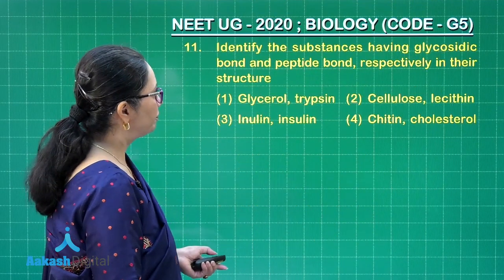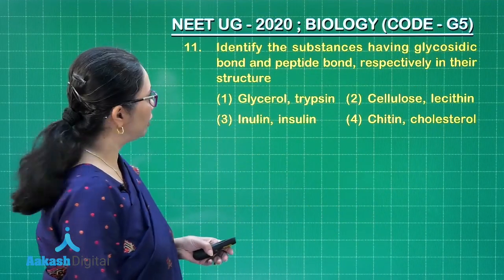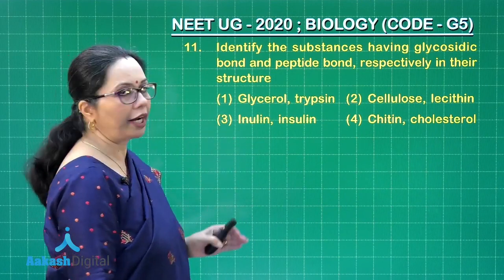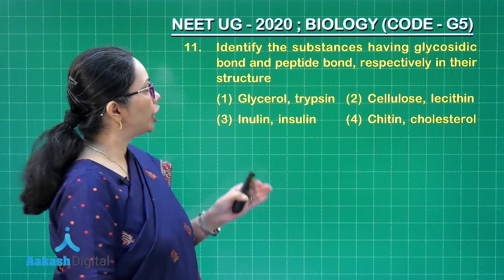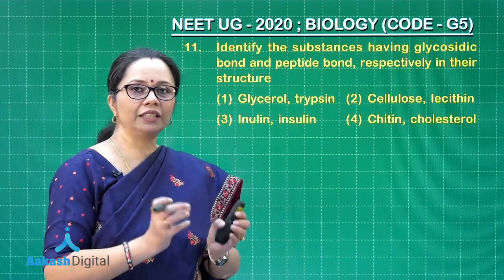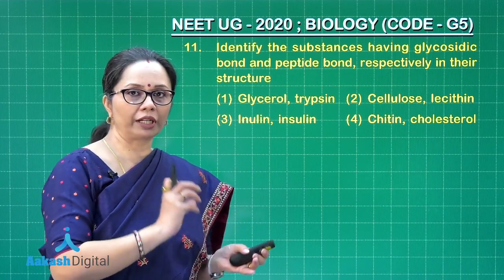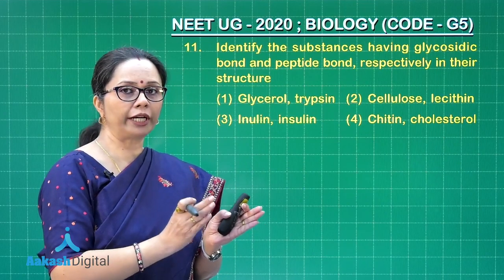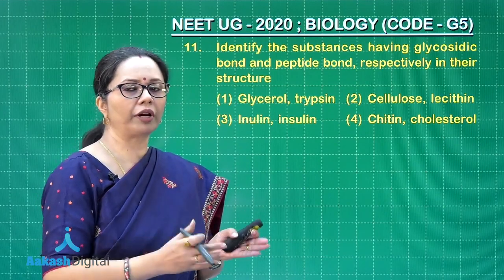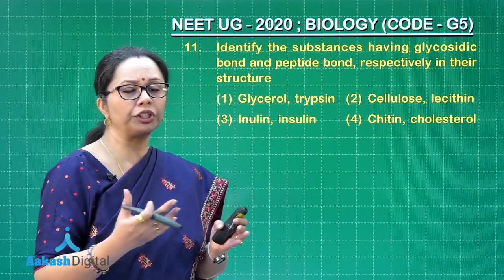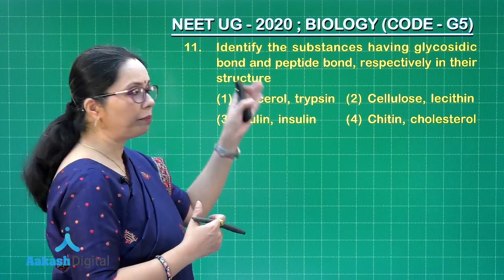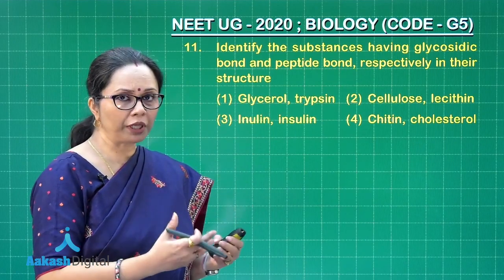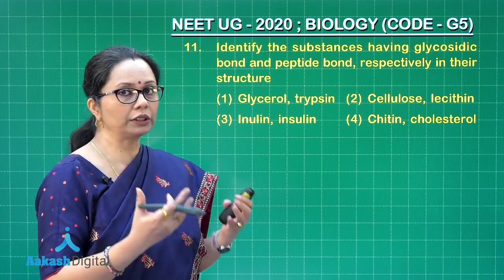Question 11: identify the substances having a glycosidic bond and a peptide bond respectively in their structure. A glycosidic bond is formed between monosaccharide residues, giving an oligosaccharide or polysaccharide. A peptide bond is formed between two amino acids, leading to peptides or, if many amino acids are involved, a protein.